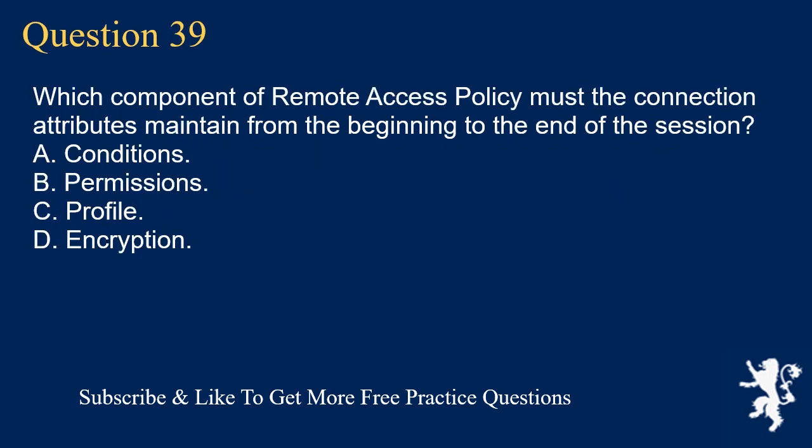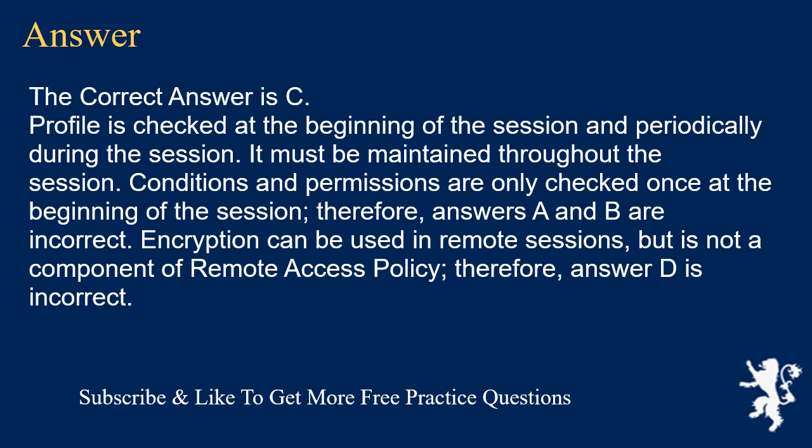Question 39. Which component of remote access policy must the connection attributes maintain from the beginning to the end of the session? A. Conditions. B. Permissions. C. Profile. D. Encryption. The correct answer is C. Profile is checked at the beginning of the session and periodically during the session — it must be maintained throughout the session. Conditions and permissions are only checked once at the beginning of the session. Therefore, answers A and B are incorrect. Encryption can be used in remote sessions but is not a component of remote access policy. Therefore, answer D is incorrect.